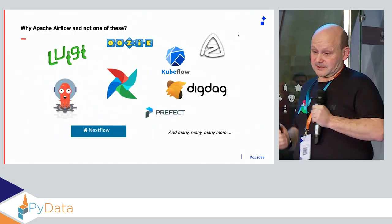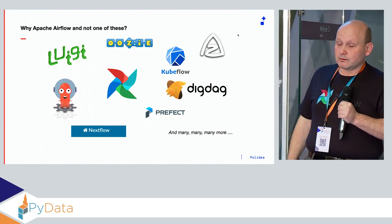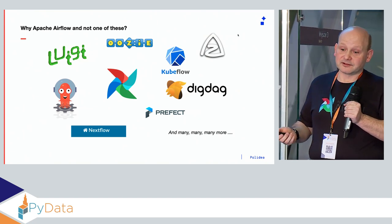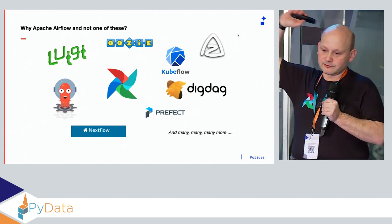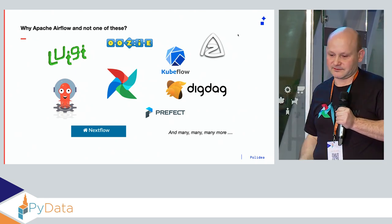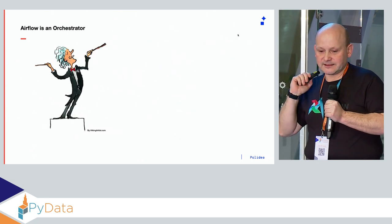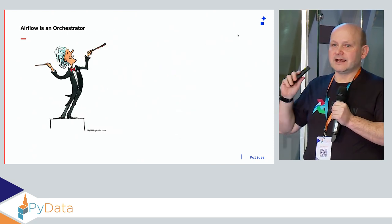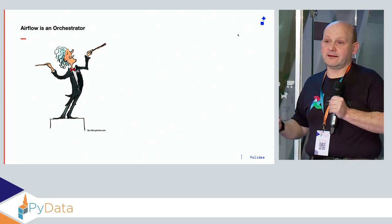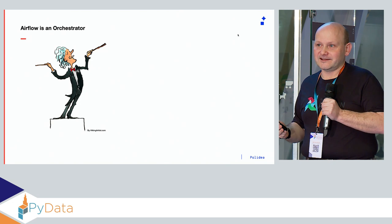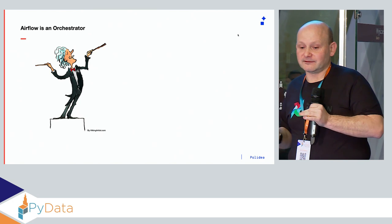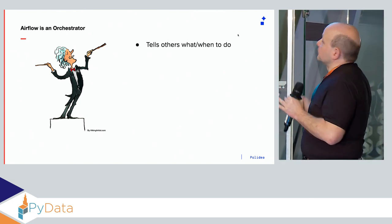Going back to the main topic: why choose Apache Airflow over other workflow management tools like Luigi, Oozie, Kubeflow, Nextflow, Argo, Prefect? Airflow stands out. First of all, Airflow is not a processing engine — it's an orchestrator. Airflow doesn't do much itself; it just tells others what to do. Think of it like a conductor in an orchestra or choir.